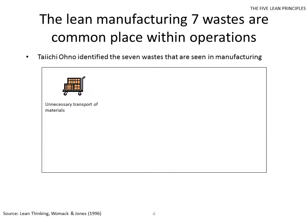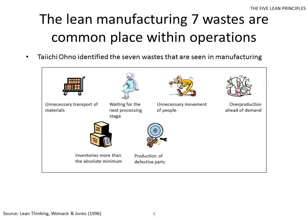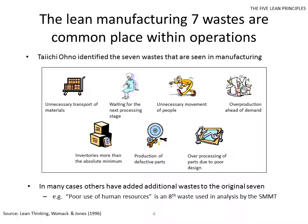The first waste Ohno identified was unnecessary transport of materials. Then there's waiting for the next processing stage, unnecessary movement of people, overproducing things ahead of demand, having inventories or stocks more than the absolute minimum, producing things that don't actually work, and overproducing stuff often due to poor design. In many cases, people have added additional wastes to this original seven, making often eight or nine — such as poor use of human resource, which was an eighth waste used by SMMT. But often poor use would fit into many of the other categories.